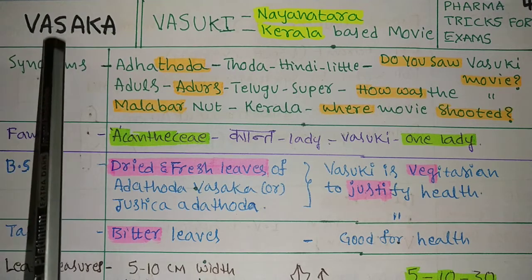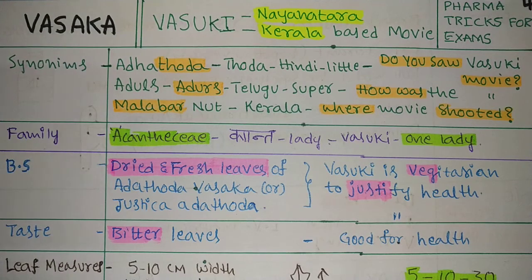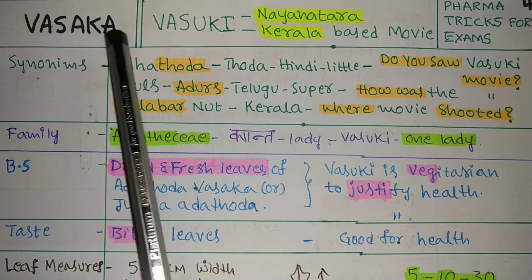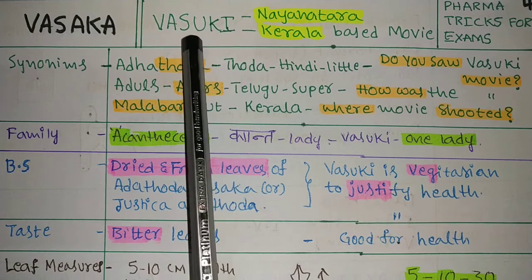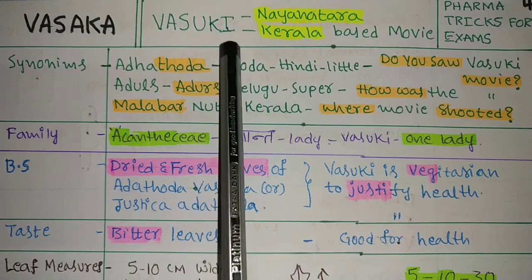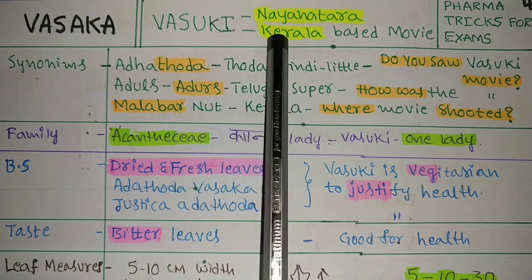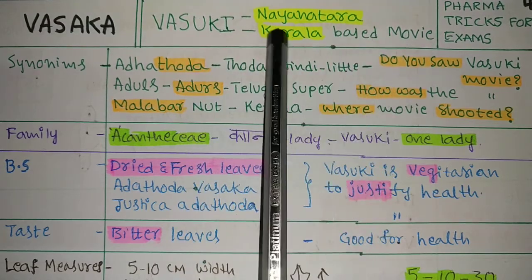Vasaka is a similar term like Vasuki. Vasuki is a very popular film, a Kerala-based movie with Nayanthara, a beautiful actress who acted in the film Vasuki.